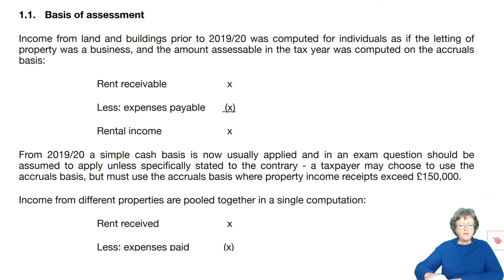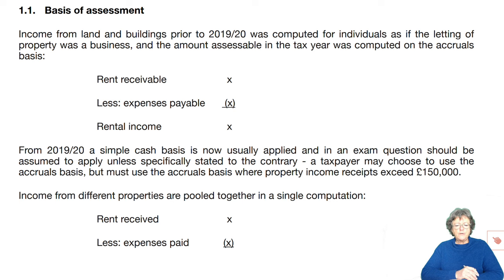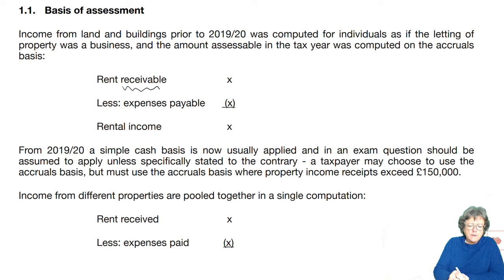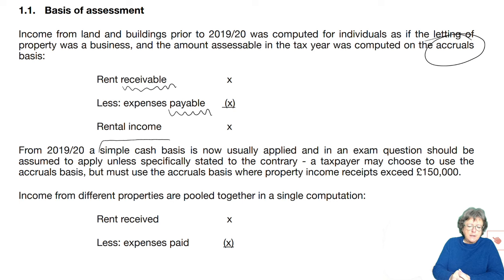Prior to 2019-2020, it was computed as if they were letting the property as a business. It was always the amount — rent receivable, expenses payable — and it was on an accruals basis. However, the rules that have been in place for some years now are that it's going to be a simple cash basis.